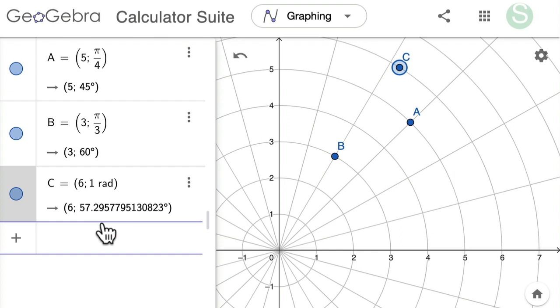And I don't need to type the rad. If I want to type in just let's say 5 comma 1, it assumes radians.